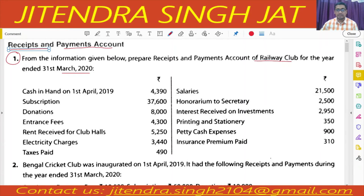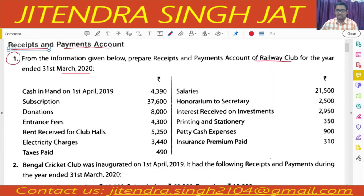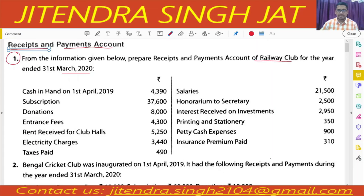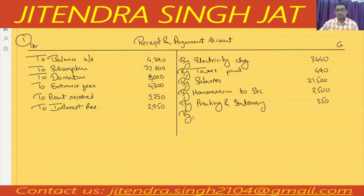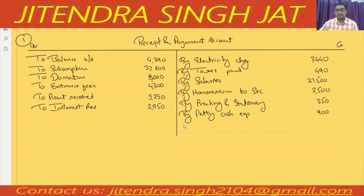Interest received on investment goes on the debit side — to interest received: two thousand nine hundred and fifty. Then printing and stationery — three hundred and fifty — cash is going out, by printing and stationery: three hundred and fifty. Petty cash expenses — nine hundred — cash goes out, by petty cash expenses: nine hundred. Insurance premium paid — by insurance premium paid: three hundred and ten.